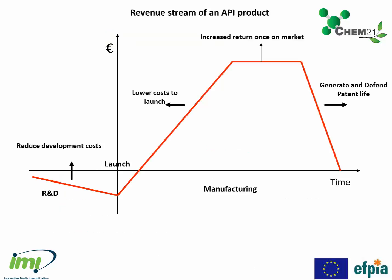If we look at the revenue stream of an API product, in the R&D phase we're spending money to develop and launch the product, so the cash flow is negative. When we get onto the market, hopefully the product will start to sell, we will make money, and it will eventually go off patent and sales will start to drop. A good route can reduce development costs, lower costs to launch, and give increased returns once on the market. Designing and introducing better, more economical, more sustainable routes later can also generate and defend patent life.